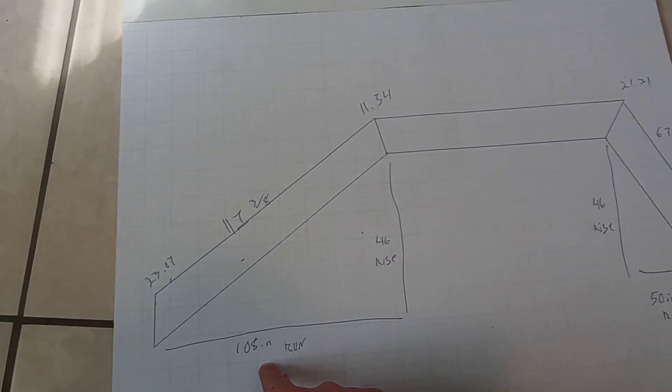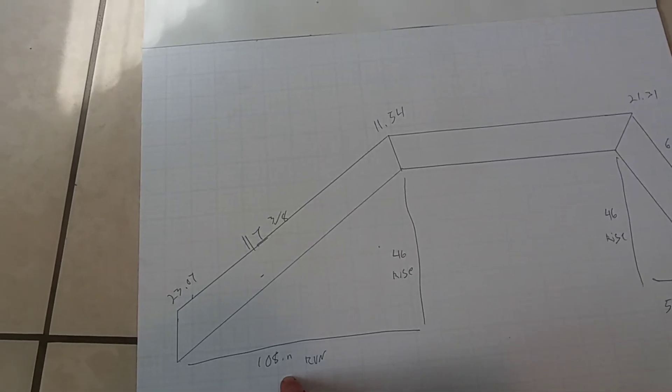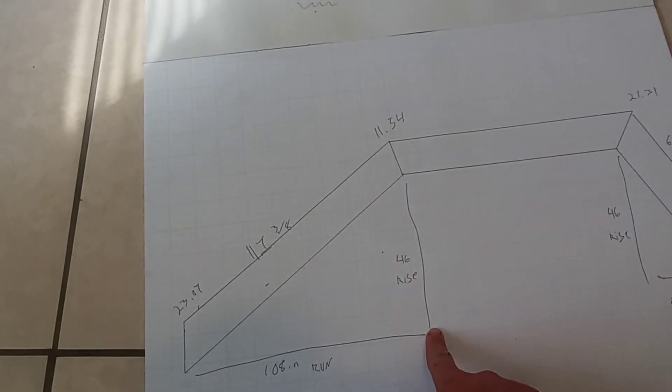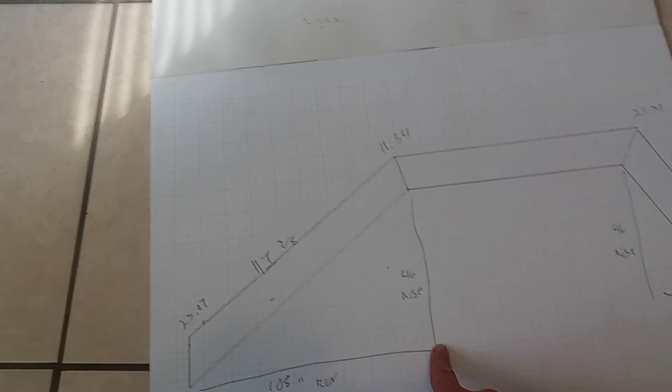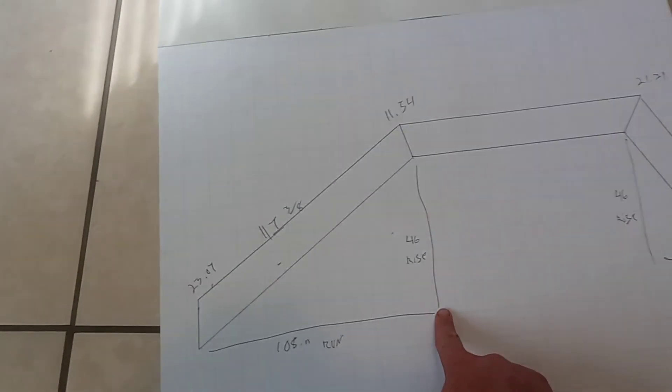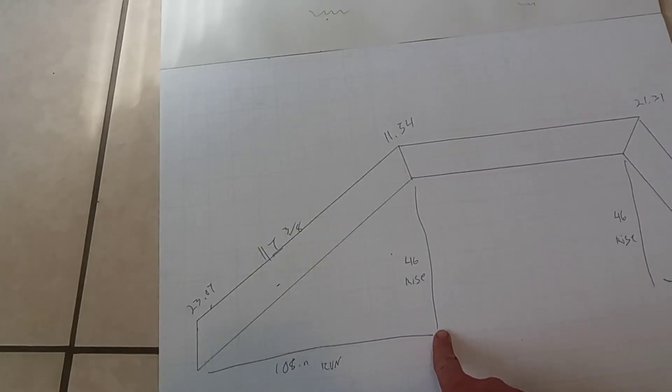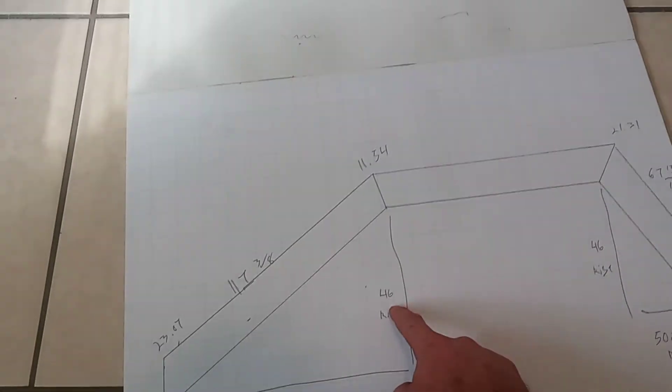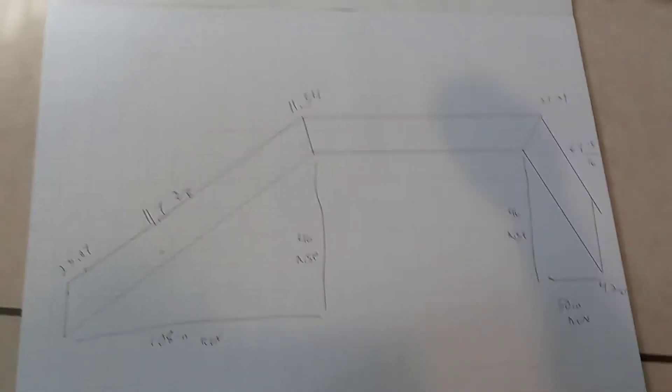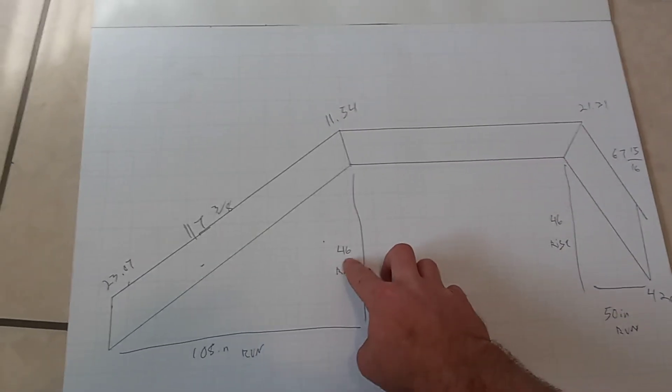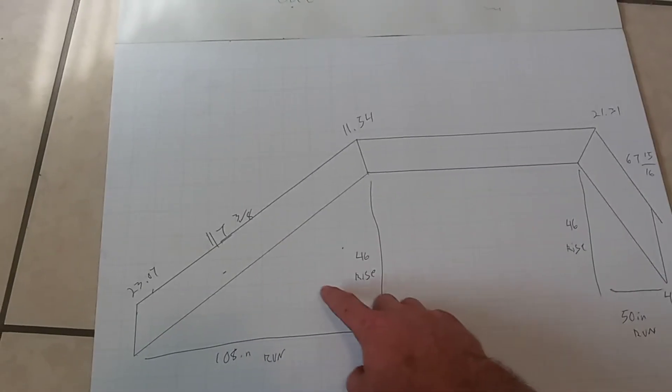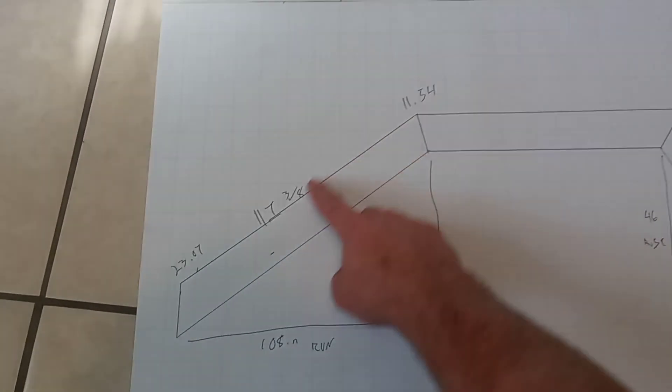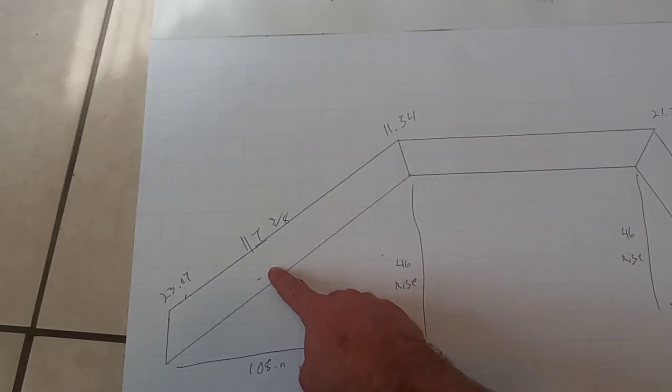108 inches run. So from your super gutter to the outside of your post, your first post, is 108 inches. You would enter that into the calculator as 108 inches run. A 46 inch rise. You would enter that into the calculator as 46 inch rise. This gives you a diagonal from this point to this point. 117 inches and 3 eighths.